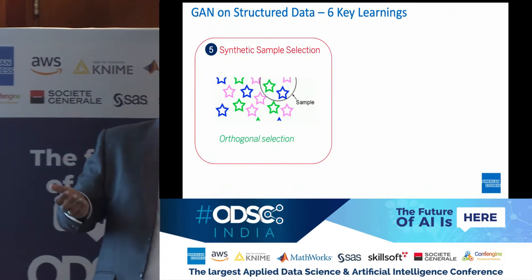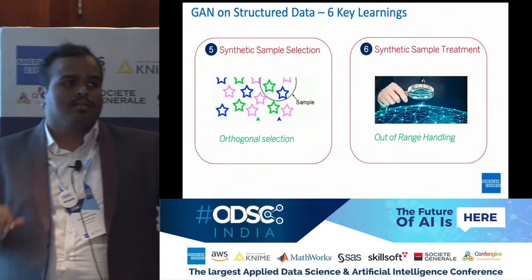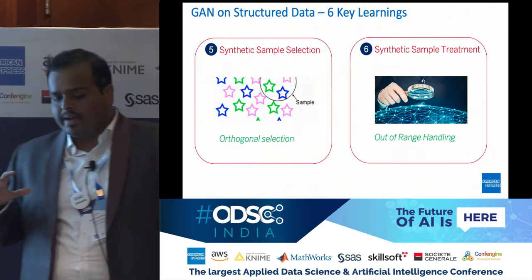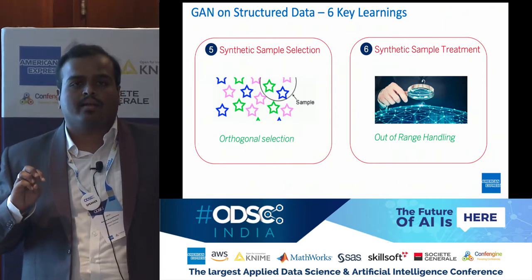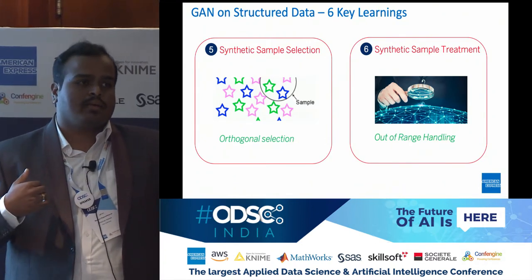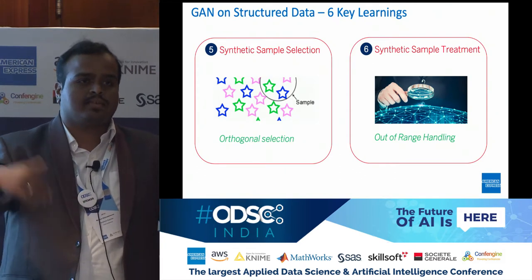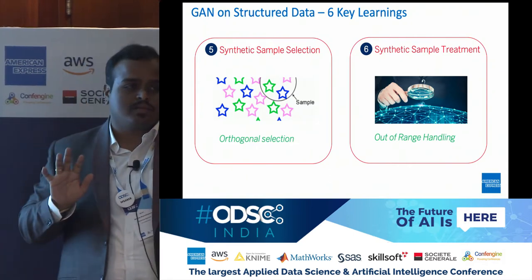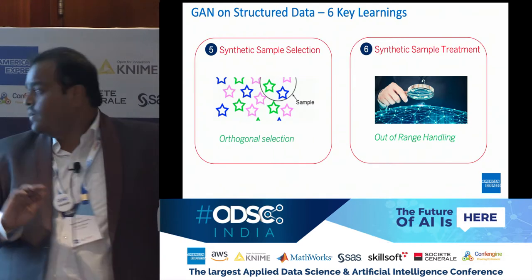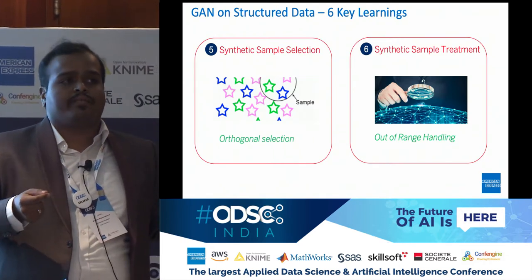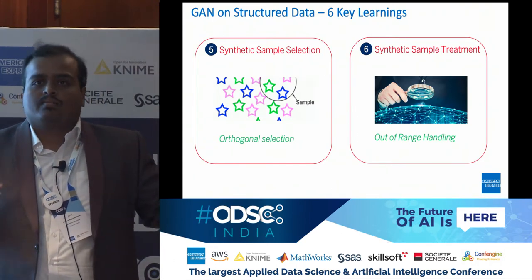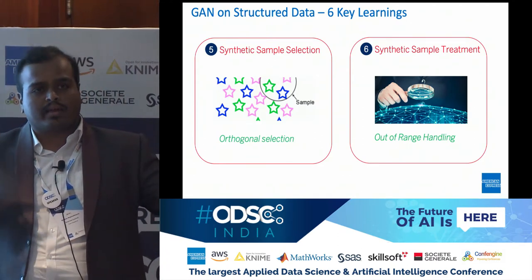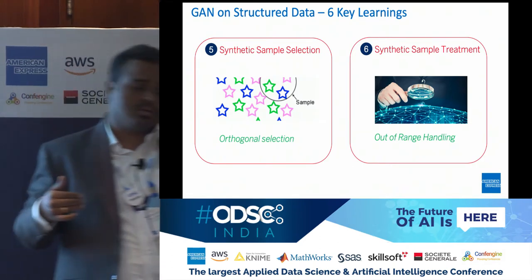Learning 6: now you have picked orthogonal samples — do you want to use them as-is? You will also have to treat the synthetic samples again. It becomes a somewhat counter-intuitive cycle: you want the computer to tell you a synthetic data point, but then you manually intervene and adjust it to look more like actuals before using it. For example, a credit score can only go from 600 to 850, but GAN might give you a synthetic credit score of 2900, which makes no sense and will unnecessarily hurt model efficiency. You must first address out-of-range values before using those synthetic data points.